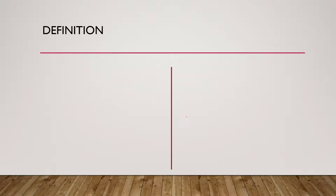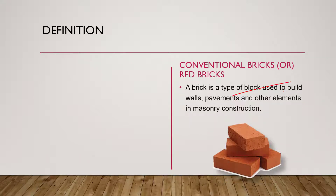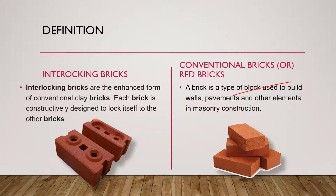Before going directly to the differences, we need to know the definitions. Bricks are a type of block used to build walls, pavements, and other structures in masonry construction. Interlocking bricks are an enhancement of conventional clay bricks — each brick is constructively designed to lock itself to the adjacent bricks.